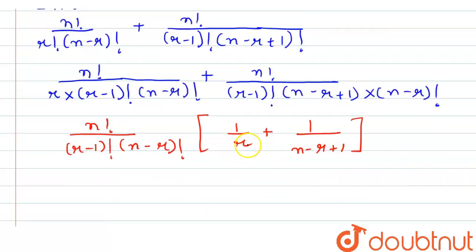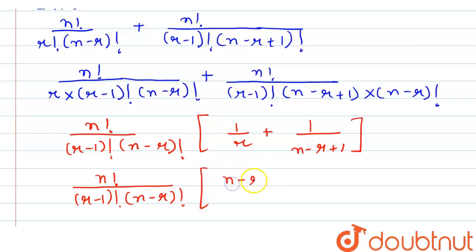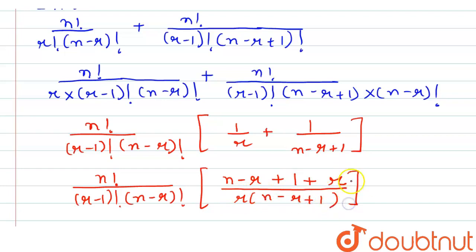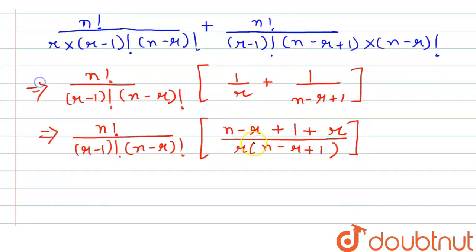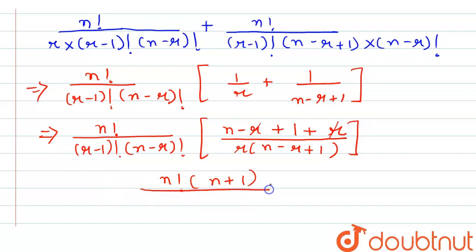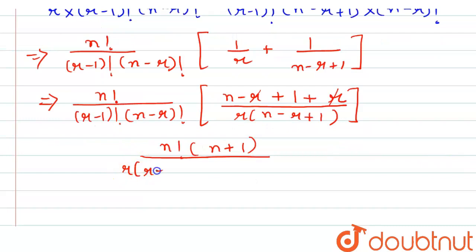Now let us make their denominators the same. We get N factorial by R minus 1 factorial into N minus R factorial, and in the bracket we have N minus R plus 1 plus R, divided by R into N minus R plus 1. Here in the numerator, R and minus R cancel, so we get N factorial and N plus 1, and in the denominator we have R into R minus 1 factorial into N minus R plus 1 into N minus R factorial.